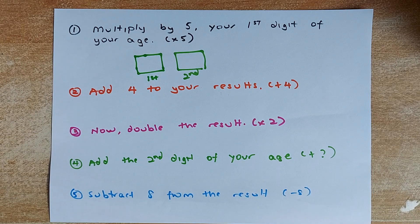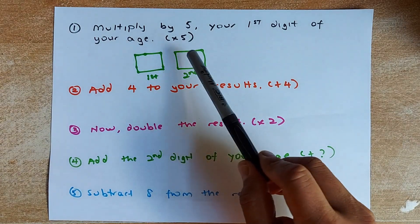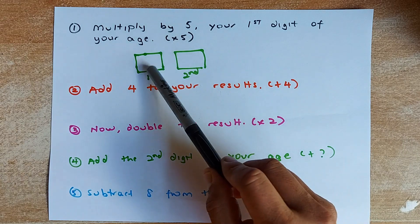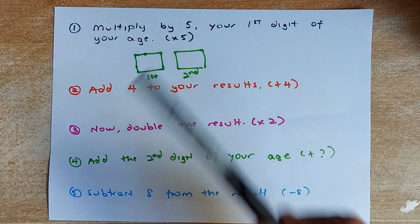If you are below 10, then the first digit has to be 0 and then the number. For example, you are 9 years old, so 0, 9. 6 years old, 0, 6. Very simple.